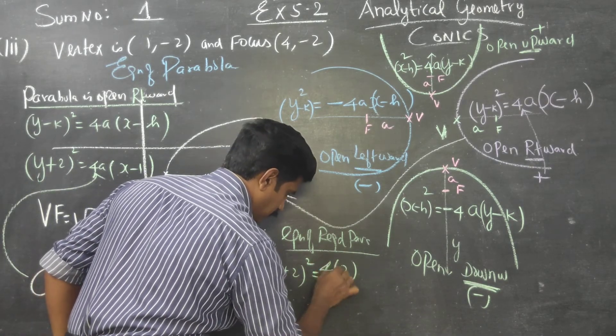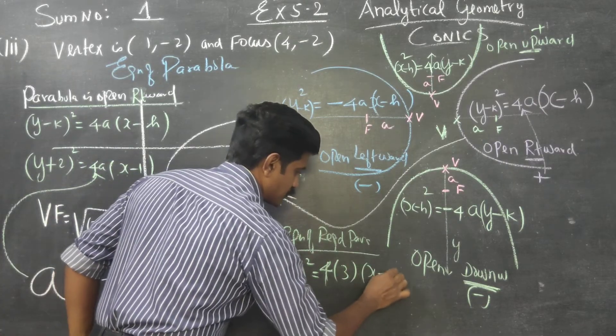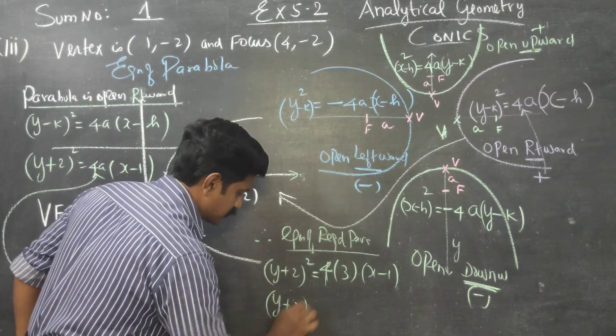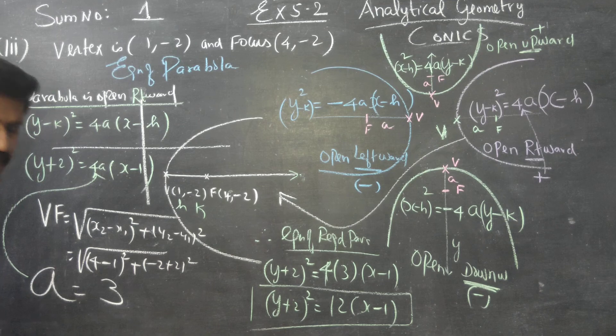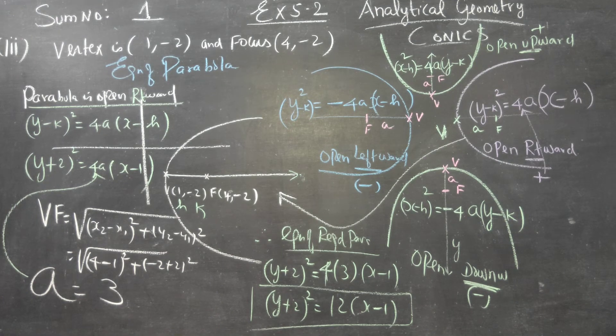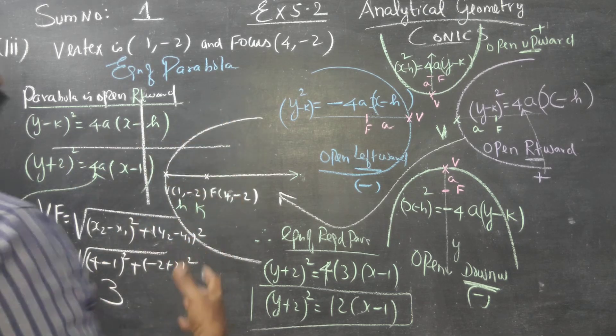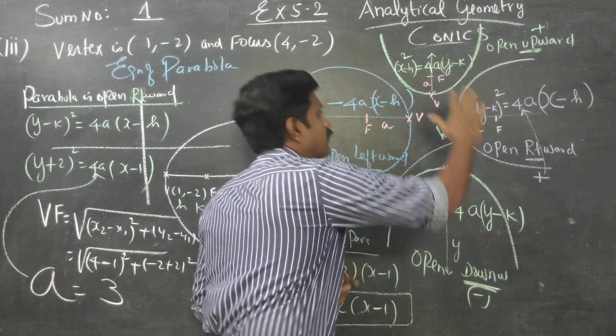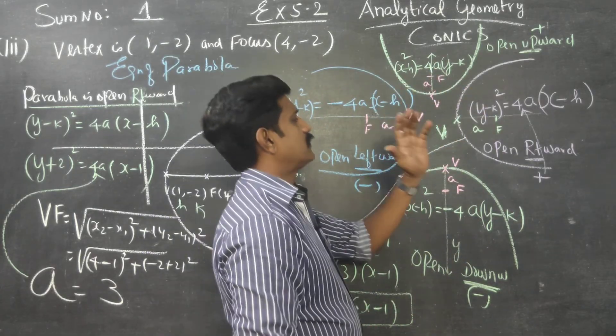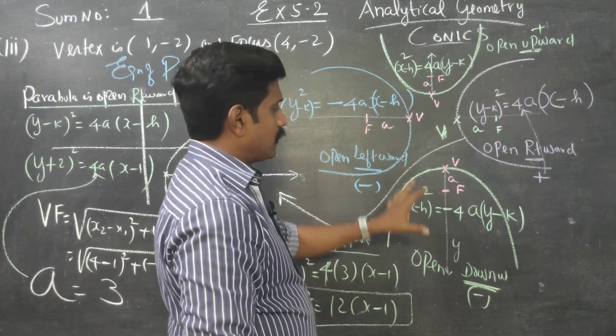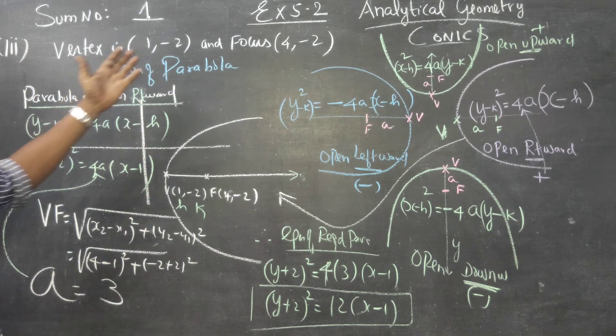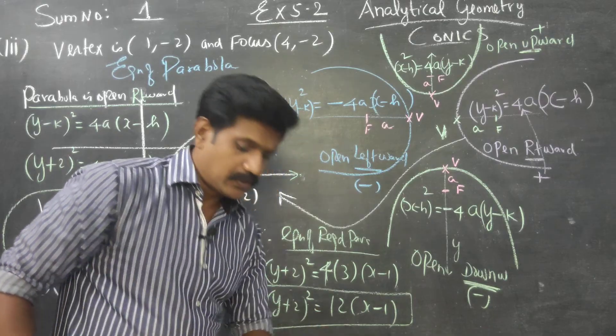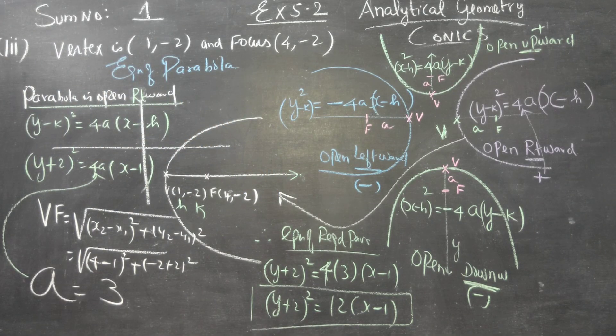If a is 3, you will get the equation of the parabola. Therefore, equation of required parabola is (y+2)² = 4×3(x-1). Your answer will be (y+2)² = 12(x-1). This is your parabola, your final answer. Thank you.